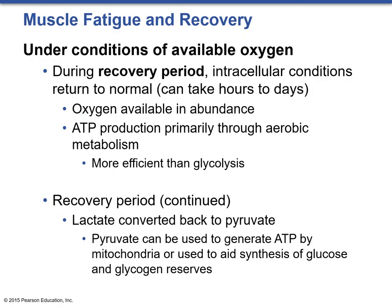While going through this process of insufficient oxygen, we're generating an oxygen debt over time as we continually produce pyruvate and then lactic acid in order to get ATP. During our recovery period where we have available oxygen—maybe we finished a run and we're sitting down resting—our intracellular conditions can return to normal. This could take a few hours or in some cases a few days depending upon how strenuous the activity was. Oxygen is now in abundance and ATP production is primarily through aerobic metabolism as it's more efficient. This recovery period allows lactate to convert back to pyruvate, which can generate more ATP or aid in the synthesis of glucose and glycogen reserves.